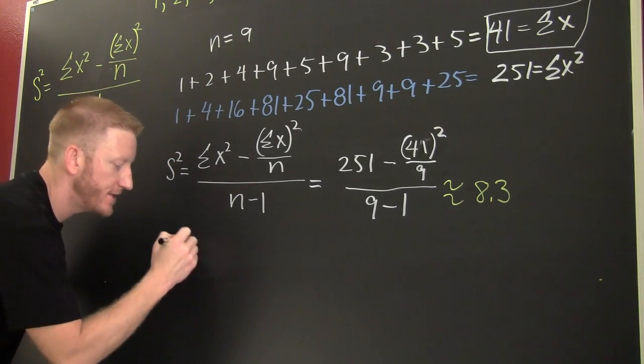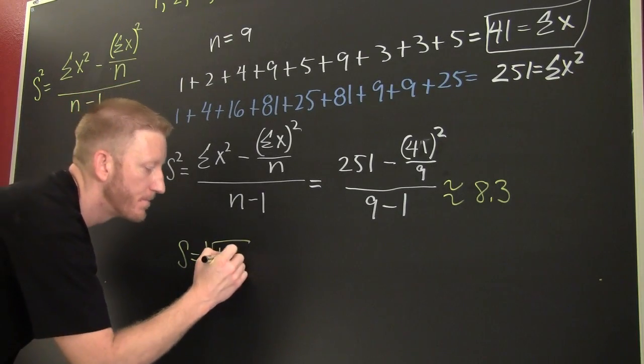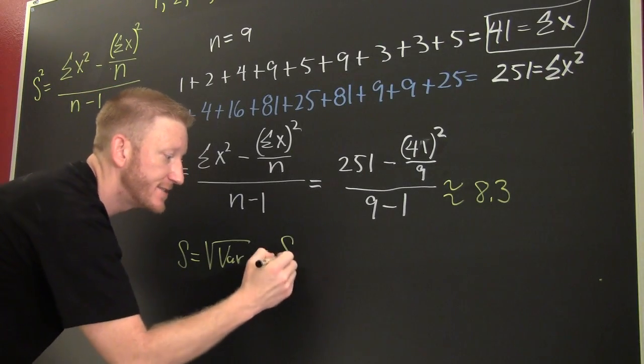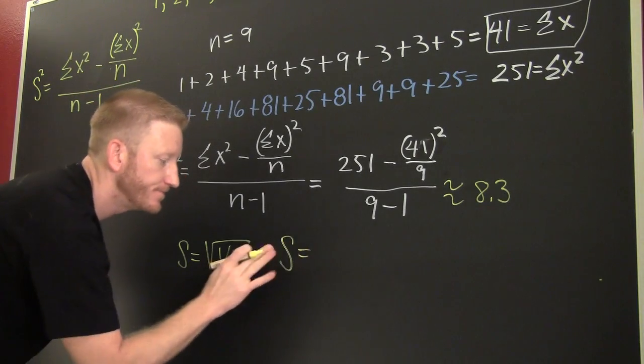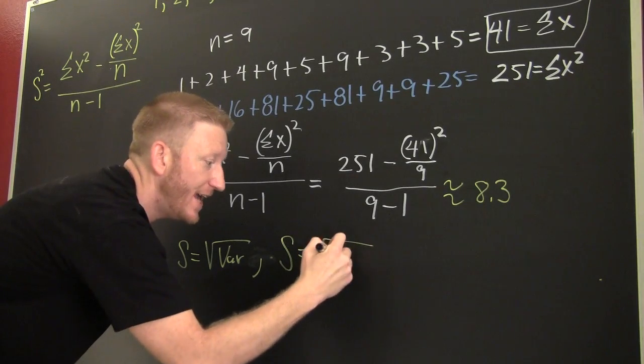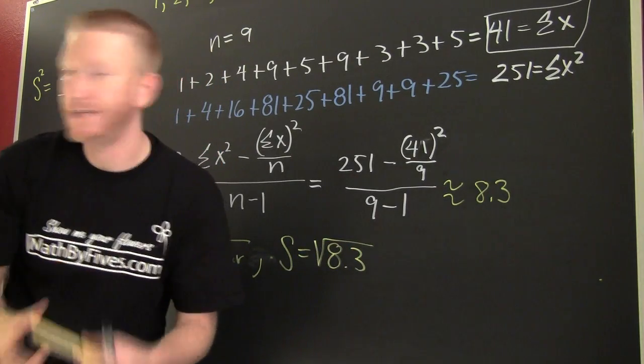Let's go and find the standard deviation. We know that the standard deviation, s, of a sample is the square root of the variance. Okay! So then the standard deviation here, s, is gonna be the square root of 8.3. Oh boy!